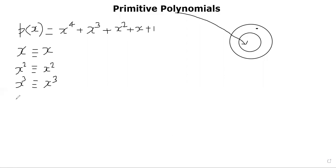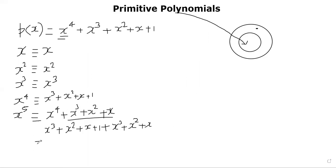x power 4 is congruent to, you see here there is an x power 4, that means you will only have to write the remaining parts. All of them are mod p of x. What about x power 5? x power 5 is x power 4 plus x cube plus x square plus x, which means x is actually not a generator.